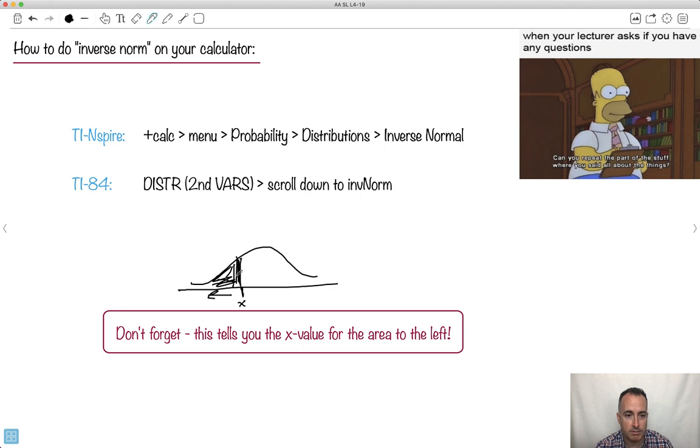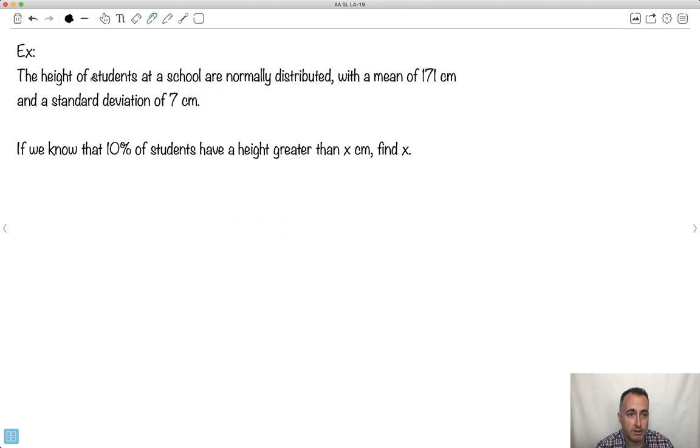Now, I've got an example where purposefully I made it to where it's not to the left, just so you can see how to do it. So here's an example. The height of students at a school are normally distributed with a mean of 171 cm and a standard deviation of 7 cm. Right away, before doing anything else, I'm going to draw myself a sketch, a normal curve like this. Where is the mean? The mean is 171.